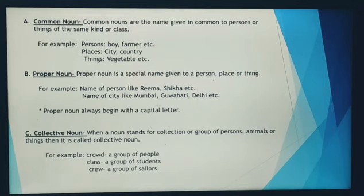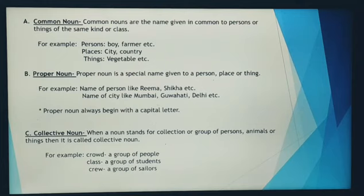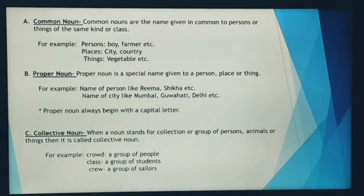The second is proper noun. It is the particular or special name given to a place, animal or any other things. For example, if we are talking about any person like Rima, Shikha, etc., or any city like Mumbai, Delhi, etc., then it denotes that we are talking about that particular person or that particular city. So such words are proper nouns. We should remember that a proper noun always begins with a capital letter.